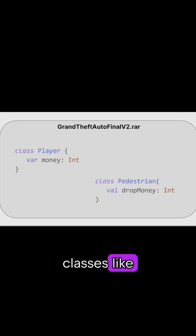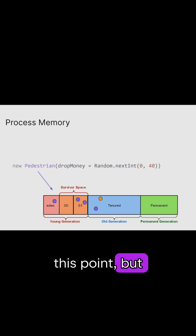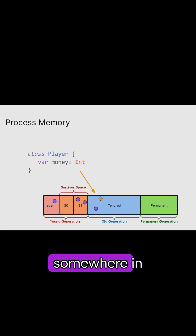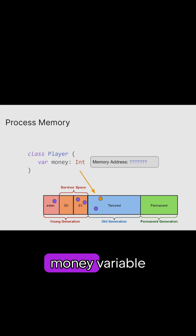And you could have some additional classes, like maybe classes for pedestrians that drop money when you run them over. What actually happens when you create these classes, when you create objects? We know that they get created and put somewhere in memory. It doesn't really matter where at this point, but somewhere in memory. This in turn means that the player class that has the money variable is also somewhere in memory.